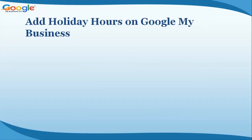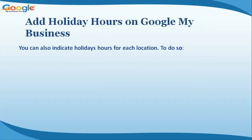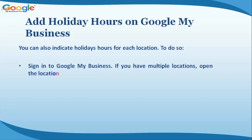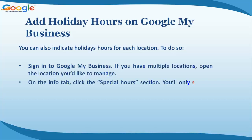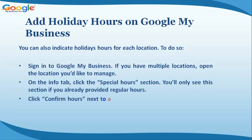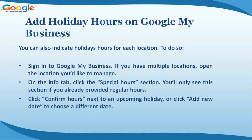You can also indicate holiday hours for each location. To do so, sign in to Google My Business. If you have multiple locations, open the location you'd like to manage. On the Info tab, click the Special Hours section — you'll only see this section if you've already provided regular hours.